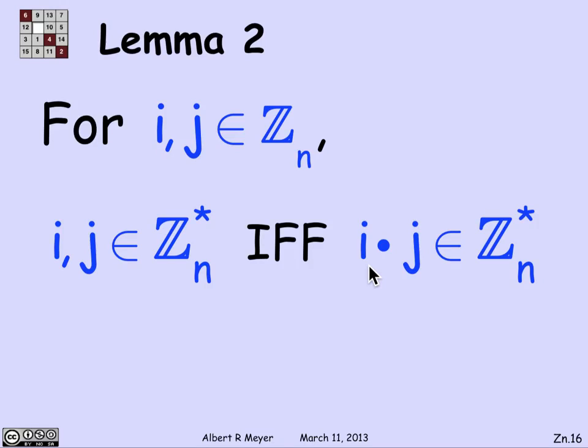Now it's worth mentioning that in general their sum is not. If you add two elements that are relatively prime to Z_n star, even if their sum is non-zero, you will typically get an element that is no longer relatively prime to n. But for multiplication, it works great. And that's what matters to us.